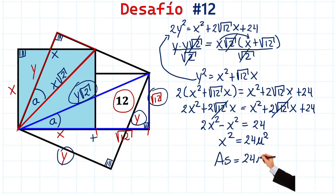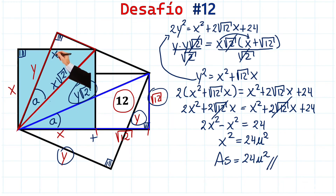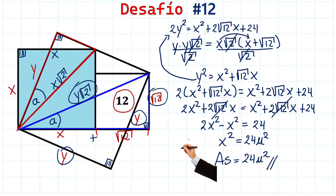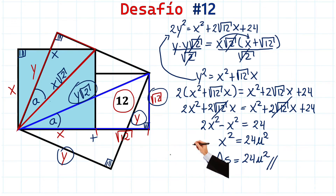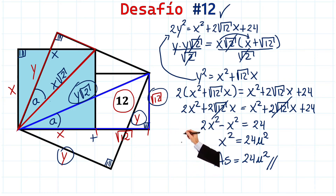Because what we were trying to find was the area of a square of side X — therefore X times X, X squared, which is the solution. Fascinating and unexpected, right? Let me know in the comments if you liked the video, and don't forget to subscribe and give it a like so you don't miss the next challenge. See you another time, bye-bye.